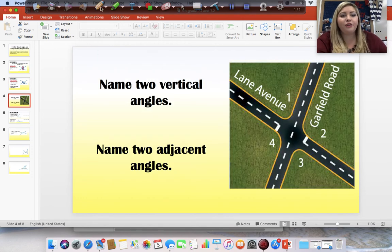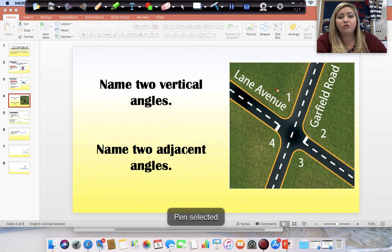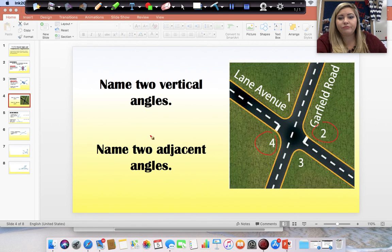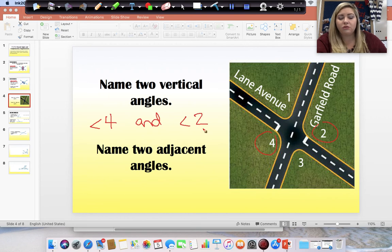All right. So, it says here, name two vertical angles. So, my two vertical angles. We can pick four and two. So, angle four and angle two. Those are two vertical angles. They are directly across from each other and they are equal to each other.